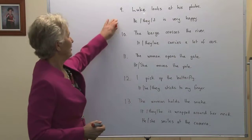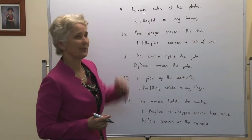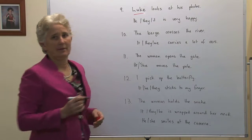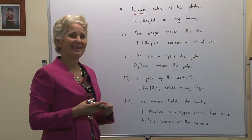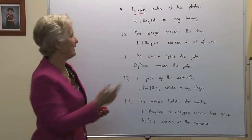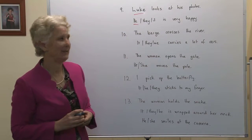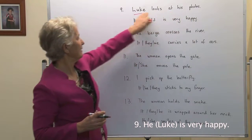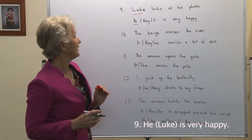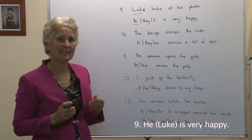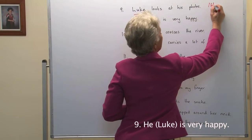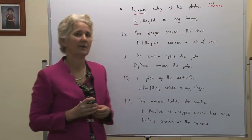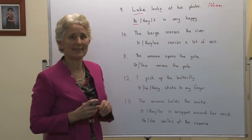Number nine: Luke looks at his photos. He, they or it — he is very happy. We need a pronoun to replace Luke. Luke is a third person, boy, male. We need he. He is very happy. Luke looks at his photos — if we had he looks at his photos, his photos is the object. Luke is the subject. We would replace his photos, plural, with them. Notice the s in the present simple tense — looks.